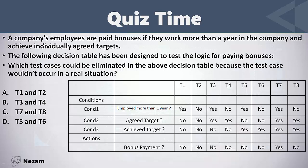Let's now solve some questions on decision table testing. A company's employees are paid bonuses if they work more than a year in the company and achieve individually agreed targets. The following decision table has been designed to test the logic for paying bonuses. We have three conditions: the first is whether the person is employed more than one year, the second is whether we agreed on a target with this person, and the third is whether this person achieved the target. We need to eliminate two test cases which can't occur in real situations.